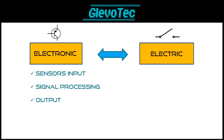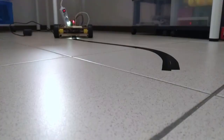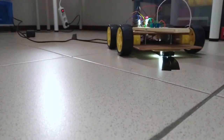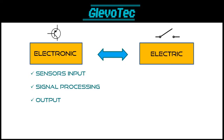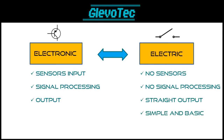A good example is a line follower robot. It can detect the black line in the environment and react according to what it sees at its input to keep it on track. An electrical robot, however, is more simple and raw. It doesn't use sensors in those forms — it may use a switch of some sort, but there is no signal processing. In short, an electrical robot has no form of intelligence and just relies on switching electrical power on and off.